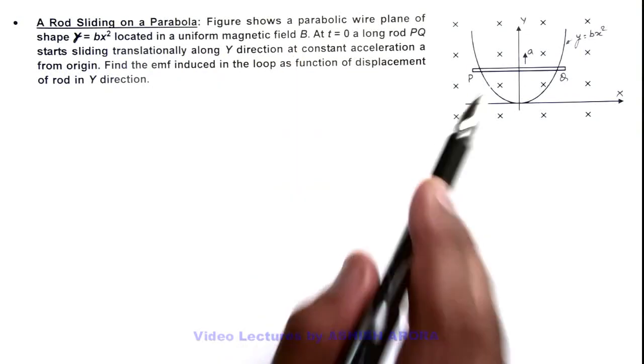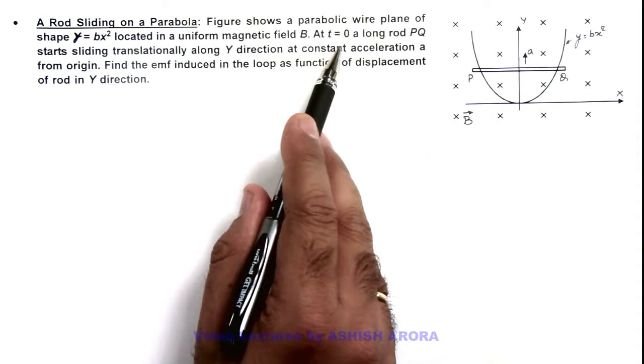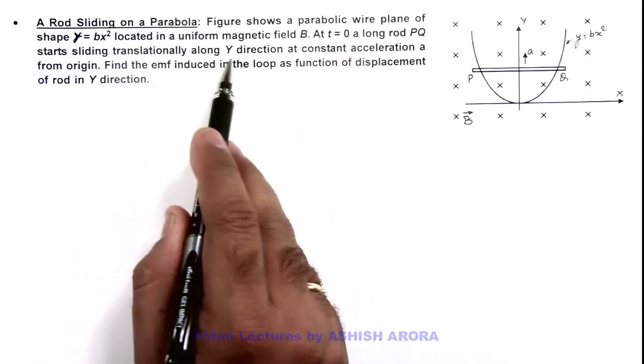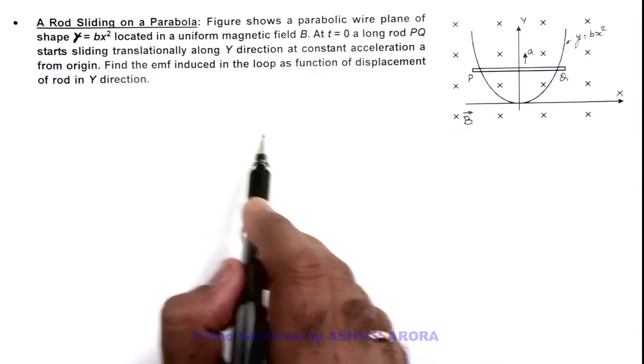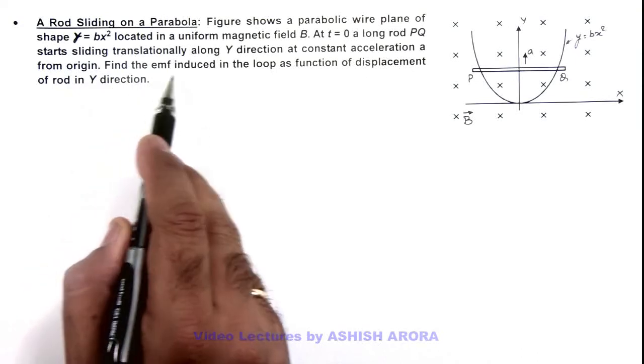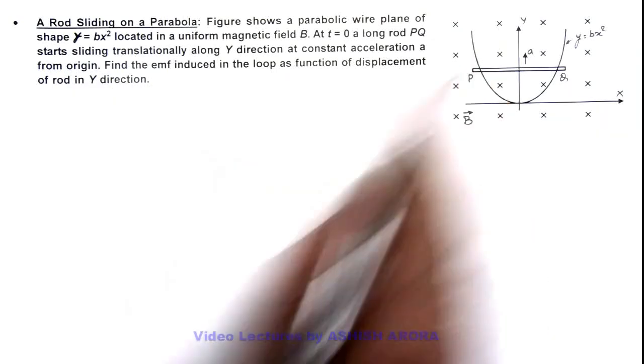The magnetic field is perpendicular to the plane of this paper. At t equals zero, a long rod PQ starts sliding translationally along Y direction at constant acceleration ay from origin. We are required to find the EMF induced in the loop as a function of displacement of rod in Y direction.